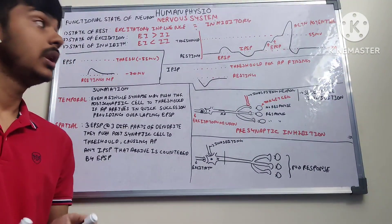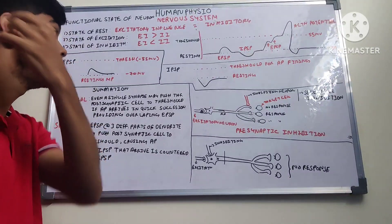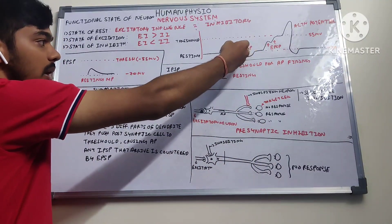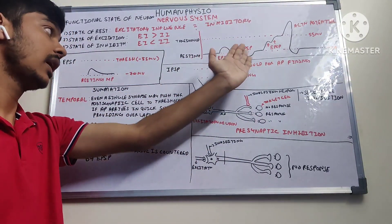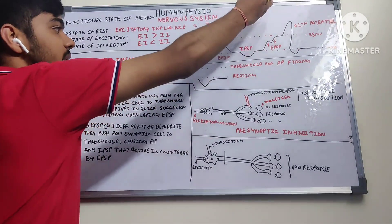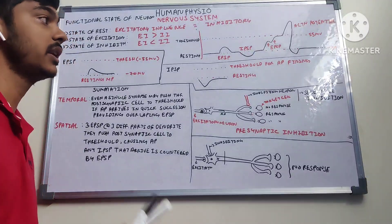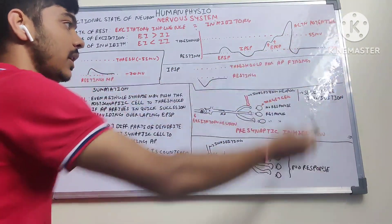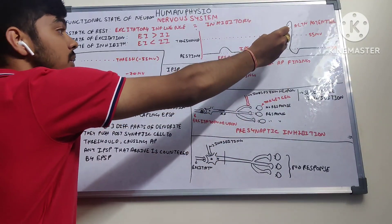Threshold is the minimum amount of stimuli required to generate an action potential. Initially the neuron is at resting state, then an EPSP is created. If inhibitory input is received, an IPSP is created. As more excitatory input arrives, the EPSP increases until it crosses the threshold — at which point an action potential is generated. After firing, the neuron returns to its resting state.